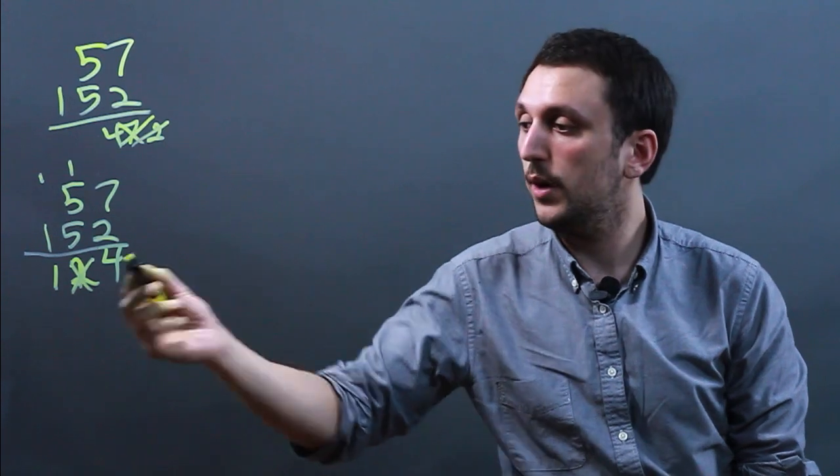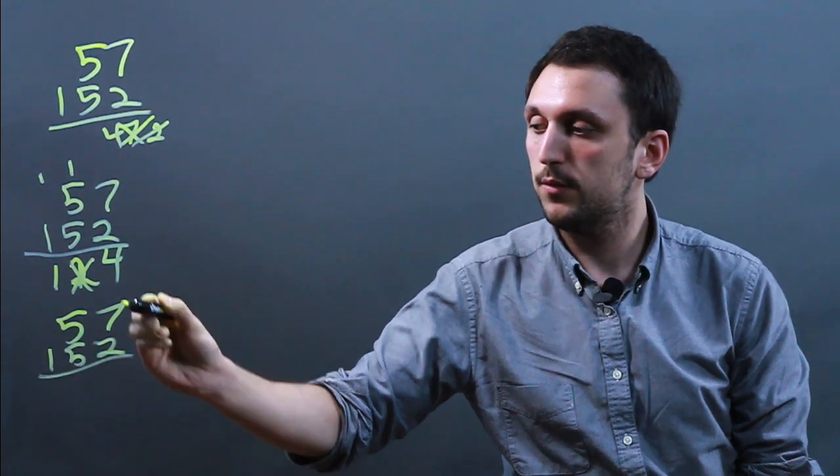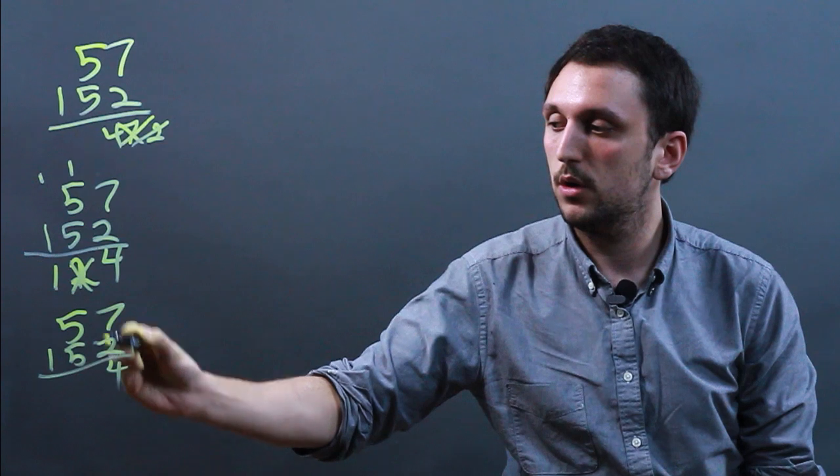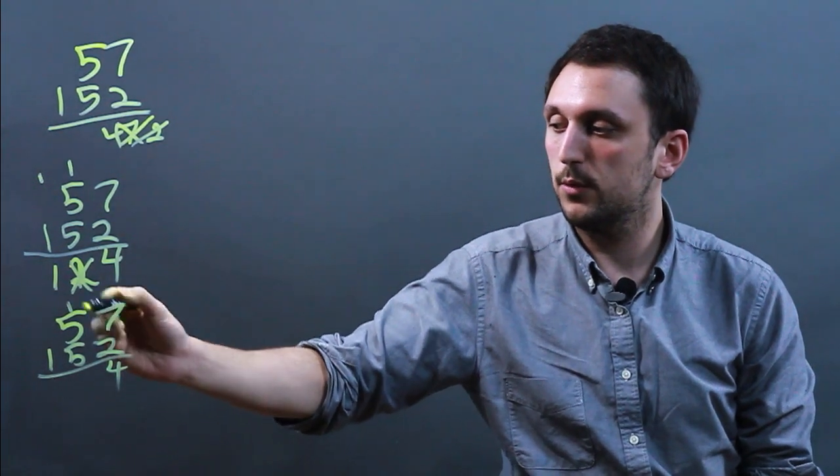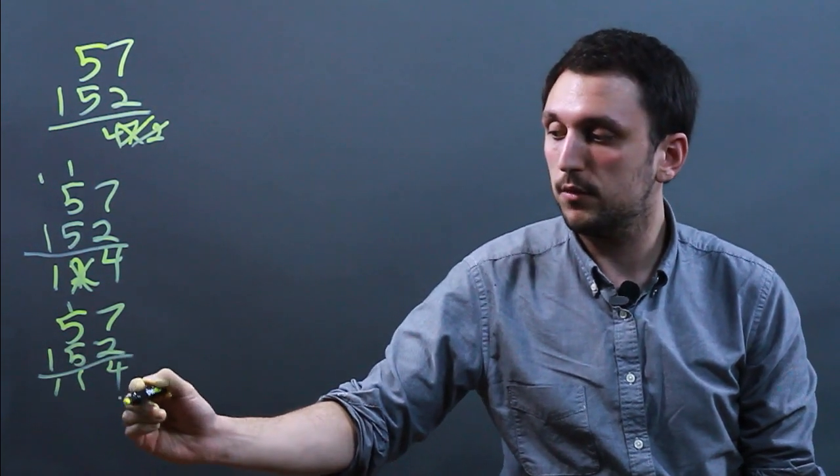Another thing you can do in multiplication is forgetting the 0, which would be saying 57 times 152. We say 7 times 2 is 4, carry the 1, 5 times 2 is 10, so we say 114. Now when we do 7 times 5, we have to put a 0 here.